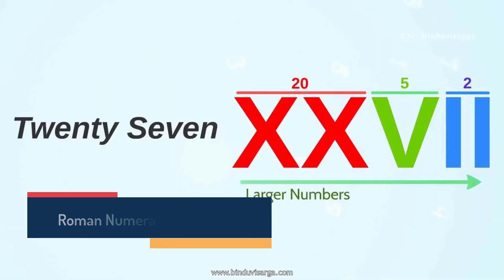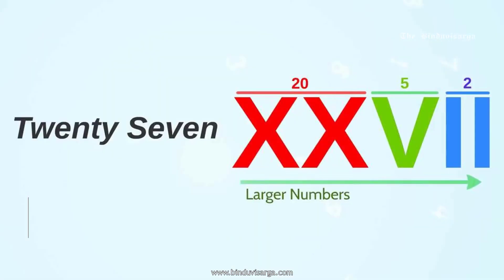You may have also noticed that the larger number always goes in descending order from left to right. This tells you to add the numerals together. However, this is not always the case, as we will see in the next part.